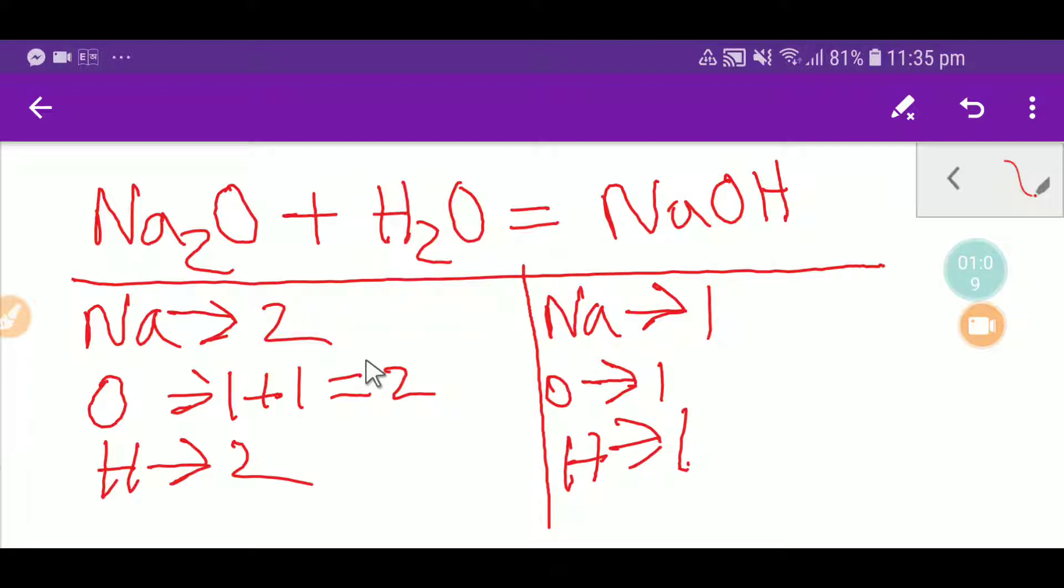To balance this reaction, let me check the number of atoms from both sides. So here we have two sodium, but here we have one sodium. So to balance the sodium, what can you do? You can multiply here by two, that gives you two.